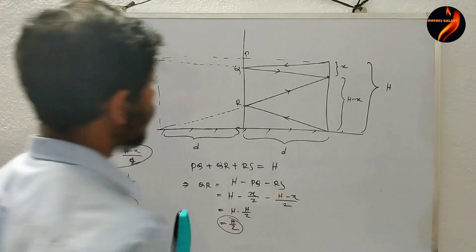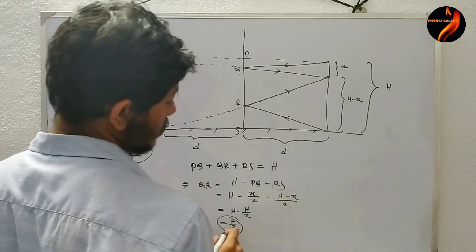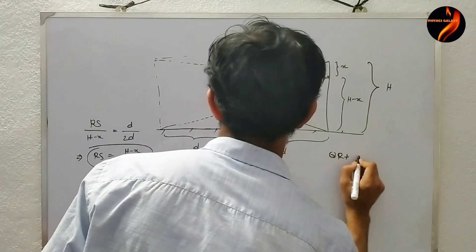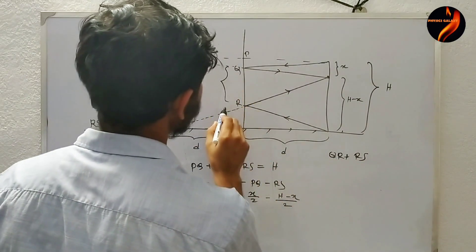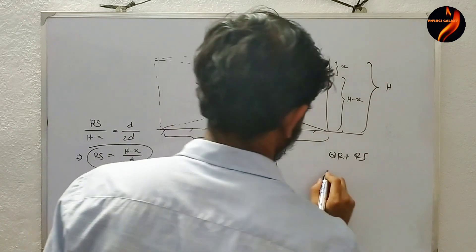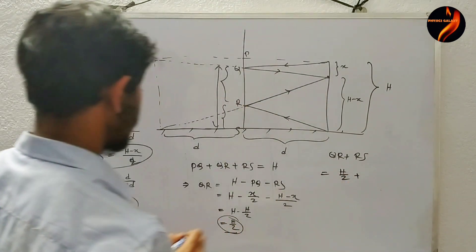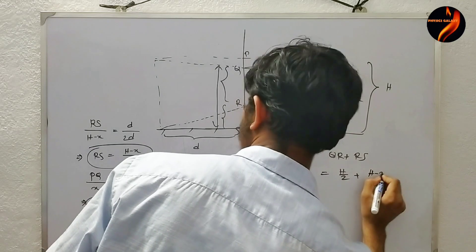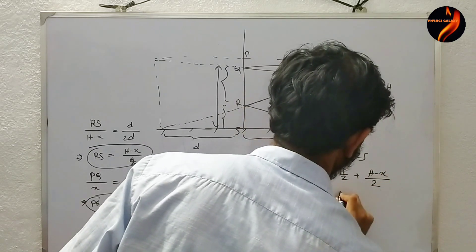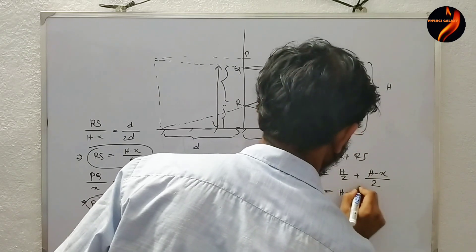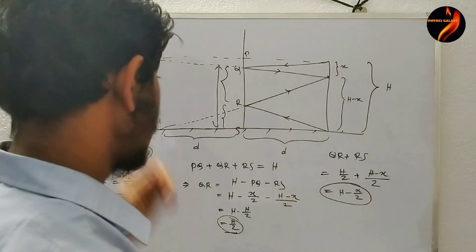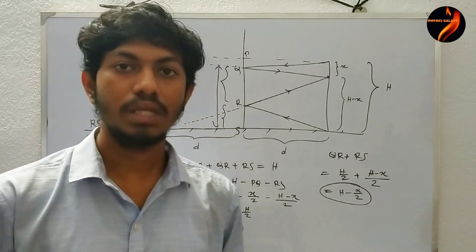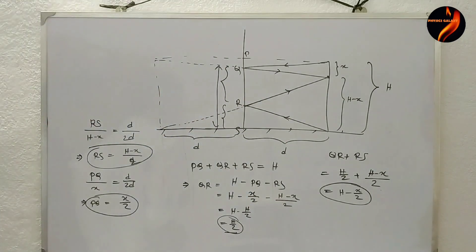Another professor asked what the minimum height of the mirror is. The minimum height is QR plus RS, which equals x/2 plus (H minus x)/2, giving H over 2. So the minimum height of the mirror required to see the full image is H/2. These were the complete questions in my HRI interview experience. Thank you.